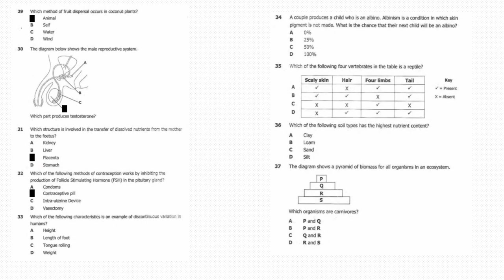Thirty-three: Which of the following characteristics is an example of discontinuous variation in humans? The answer is C, tongue rolling. Question 34: A couple produces a child who is an albino. Albinism is a condition in which skin pigment is not made. What is the chance that their next child will be an albino? Answer is 25%.